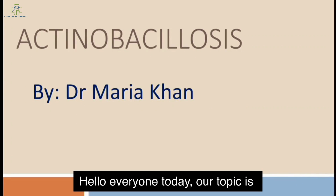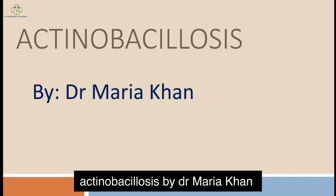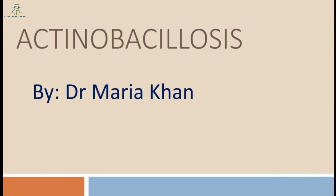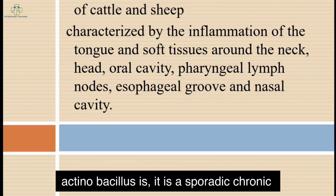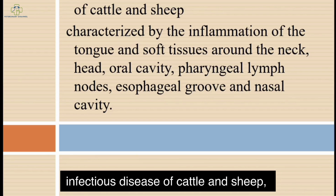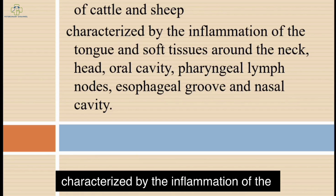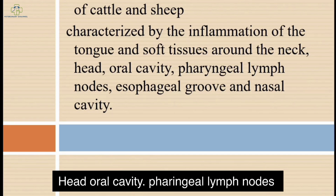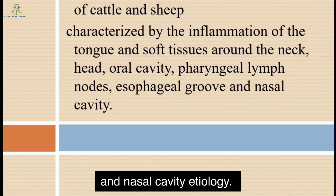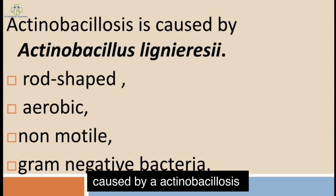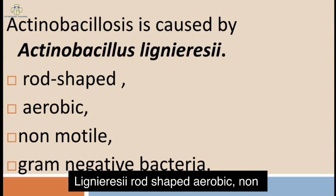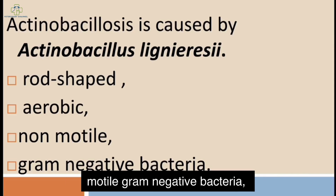Hello everyone, today our topic is Actinobacillosis by Dr. Maria Khan. Actinobacillosis is a sporadic chronic infectious disease of cattle and sheep characterized by inflammation of the tongue and soft tissues around the neck, head, oral cavity, lymph nodes, esophageal groove, and nasal cavity. Etiology: it is caused by Actinobacillus lignieresii, a rod-shaped aerobic, non-motile, gram-negative bacteria.